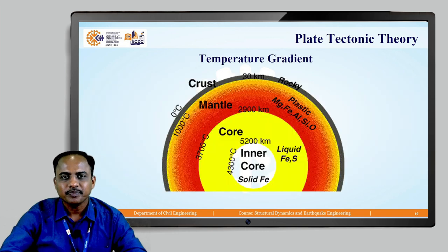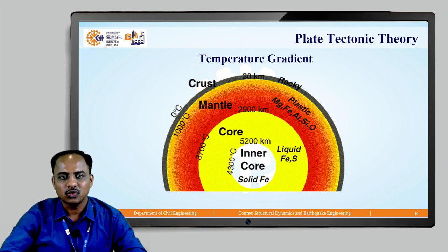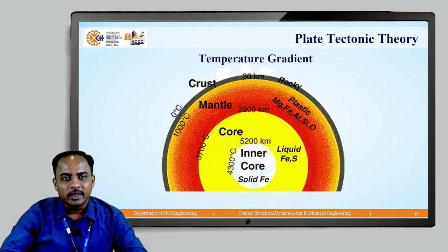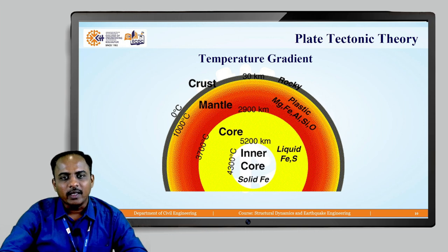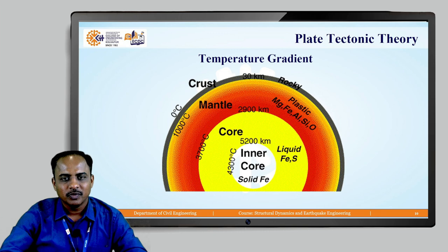Once we understand this, let us try to understand the temperature gradient present. At the crust it is 0 degrees or atmospheric temperature. Below the crust there is the mantle in viscous or plastic form, where the temperature is 1000 degrees centigrade. The temperature at the outer core surface is around 3700 degrees centigrade, and at the inner core it is 4300 degrees centigrade.